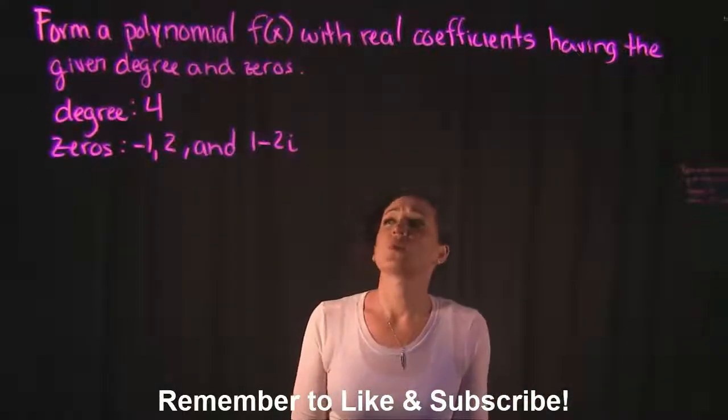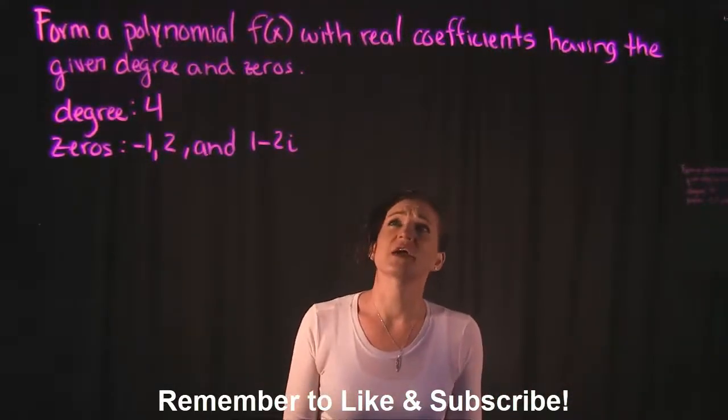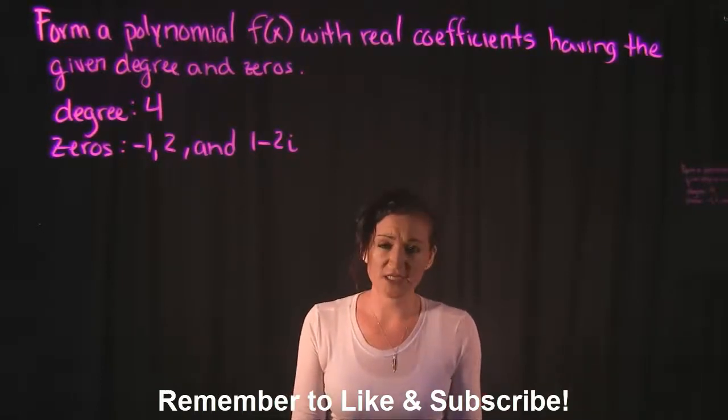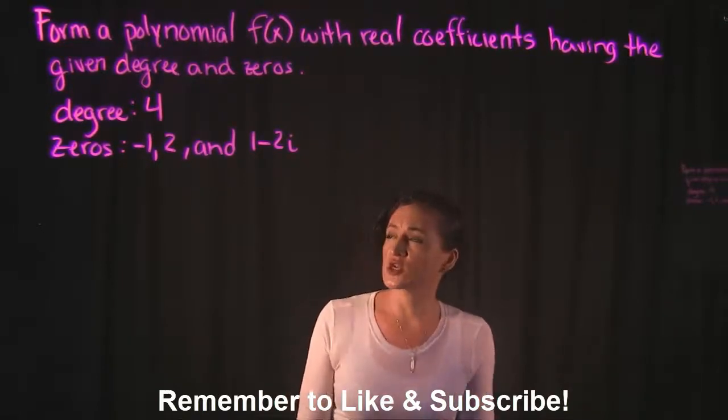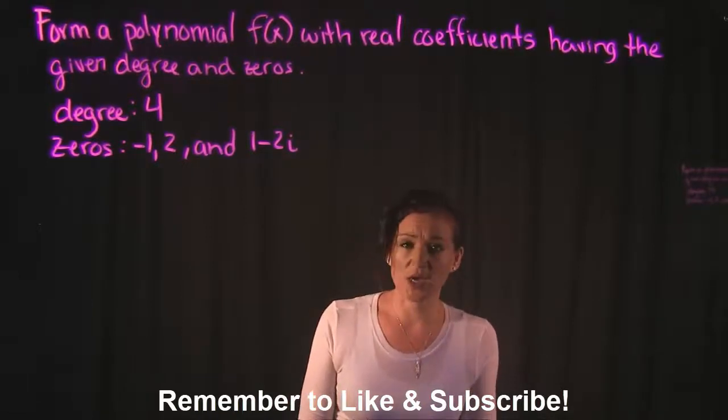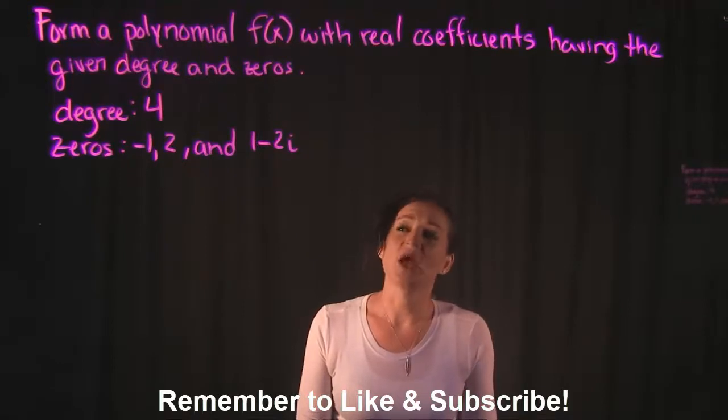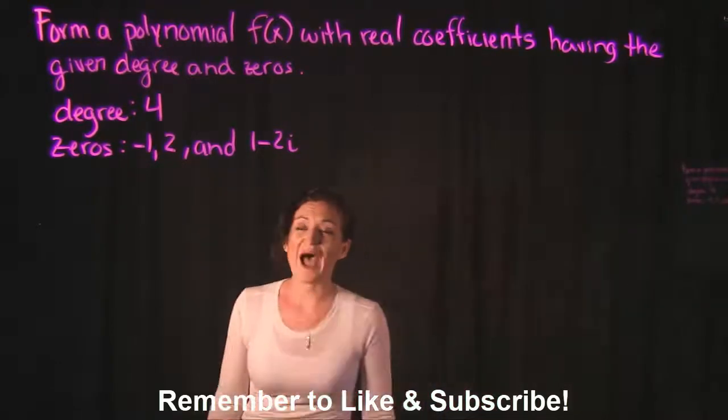For this video we're going to form a polynomial f(x) with real coefficients having the given degree and zeros. They told us that the degree of the polynomial they want us to create has a degree of 4, and that the zeros are negative 1, 2, and 1 minus 2i.